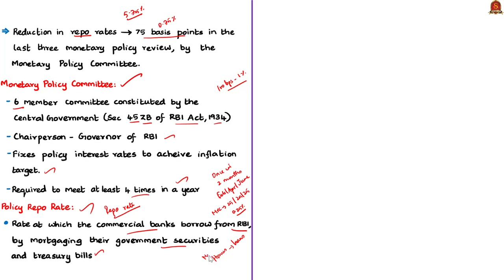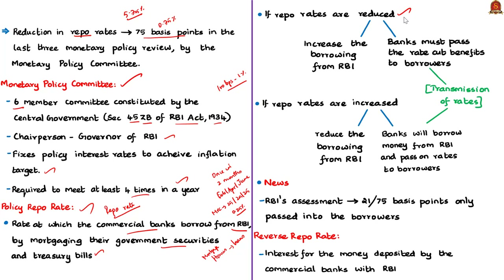When the RBI reduces the repo rate, banks have two options: they can increase their borrowing from the RBI since rates are lower, increasing their credit-creating capacity; or they can pass on the rate cut to their customers — the borrowers. If borrowers get lower rates, they borrow more, increasing money supply and liquidity in the market.